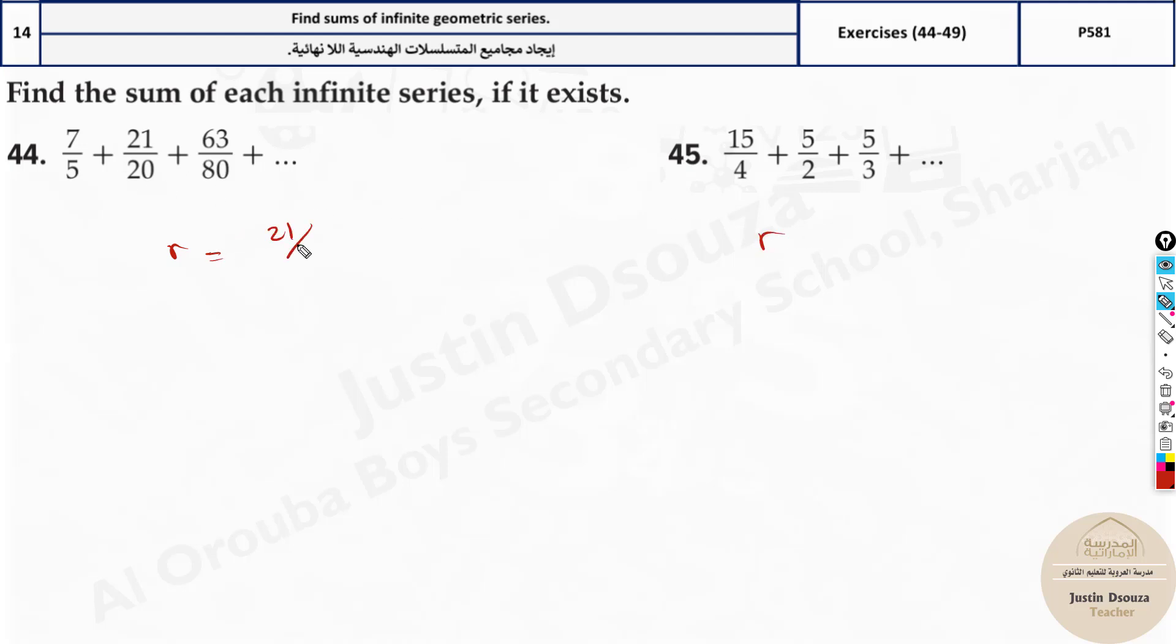Second term, 21 divided by 20 divided by 7 divided by 5. Or it's easier to write like this, 5 divided by 2, the whole fraction symbol divided by 15 divided by 4. You can solve it, but it's better to use calculator, saves a lot of time.